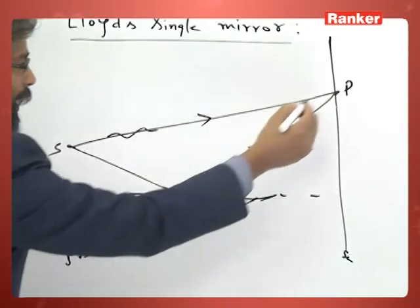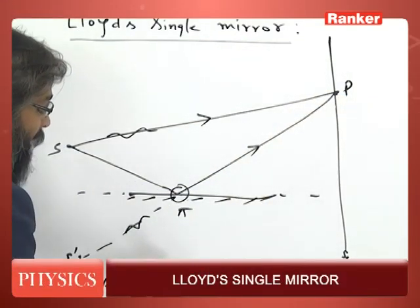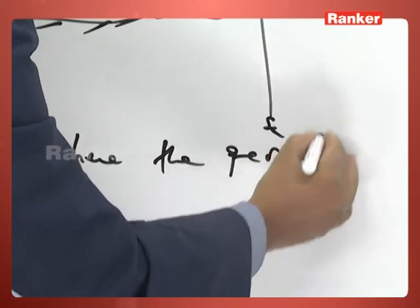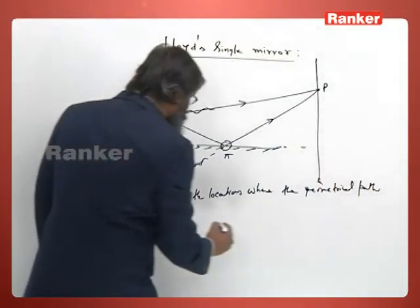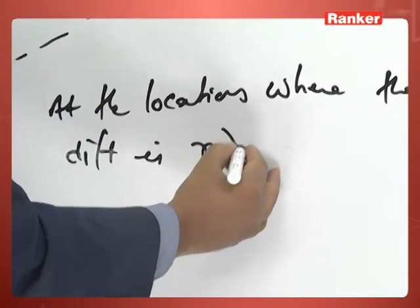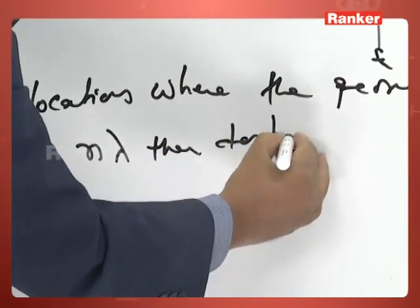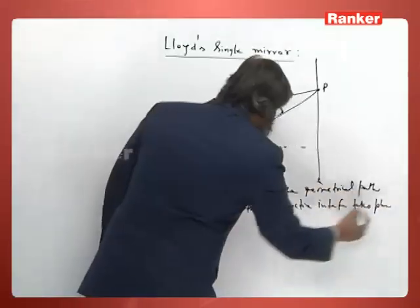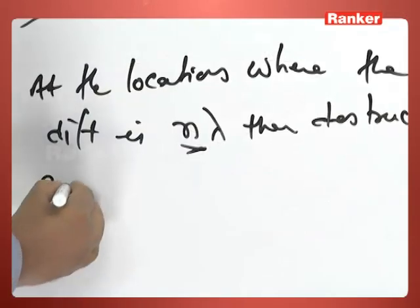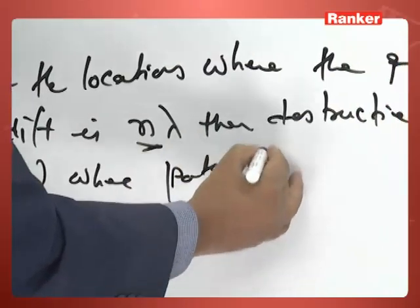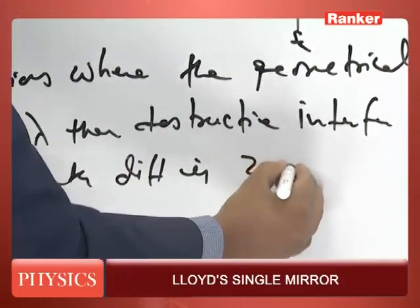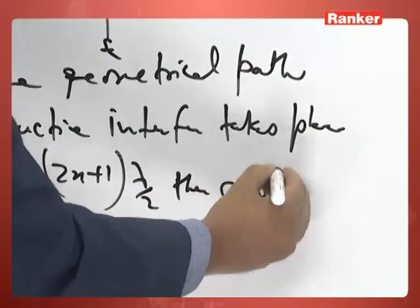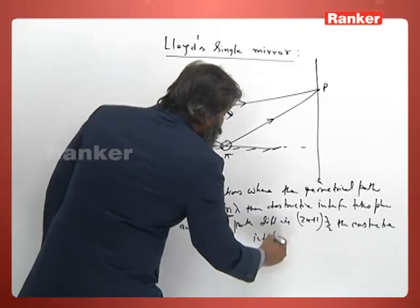That is why at the locations where the geometrical path difference is nλ, then destructive interference takes place, where n takes integral values. And where path difference is (2n+1)λ/2, where n is 0, 1, 2, 3, 4, then constructive interference takes place.